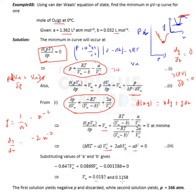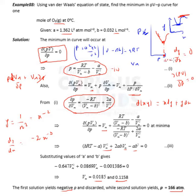The quadratic equation yields two roots: V_m = 0.0185 and 0.0258. The first root gives a negative pressure, which is physically impossible. So the second value, V_m = 0.0258, is the valid solution, yielding a positive pressure of 166 atm. This 166 atm is the minimum point on the PV-P curve. Hope you understood — thanks for watching!